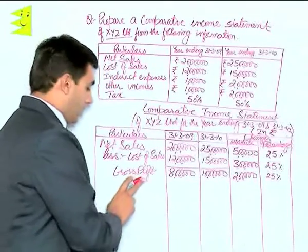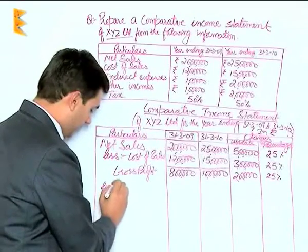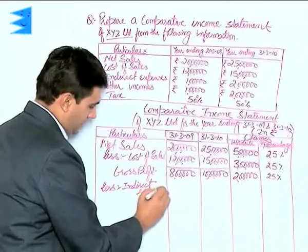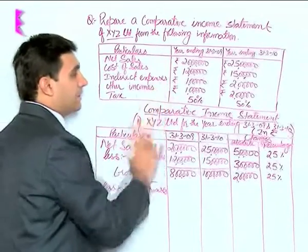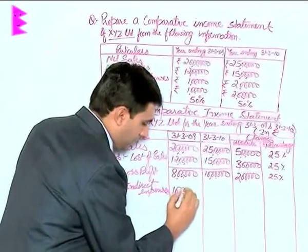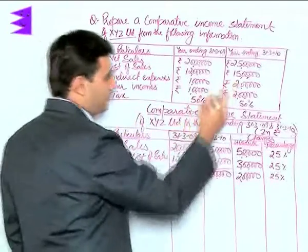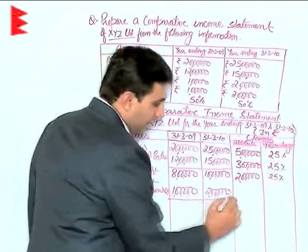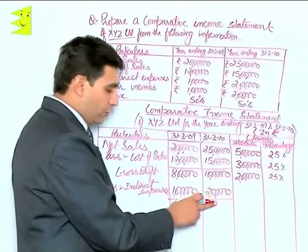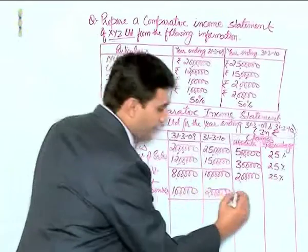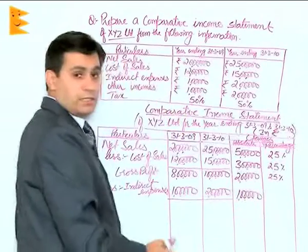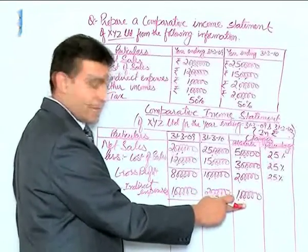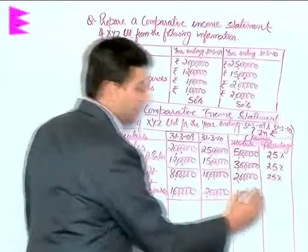Out of gross profit we have to deduct indirect expenses. In the previous year, indirect expenses were rupees 1 lakh. The absolute change is 2 lakhs minus 1 lakh, which is 1 lakh — using the same concept of current year minus previous year. The percentage change is 1 lakh divided by 1 lakh into 100, which means there was a 100 percent change.